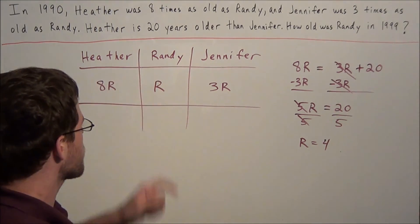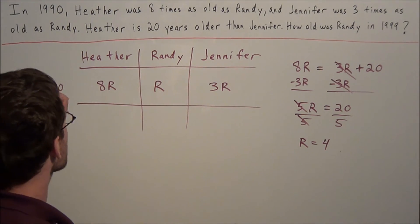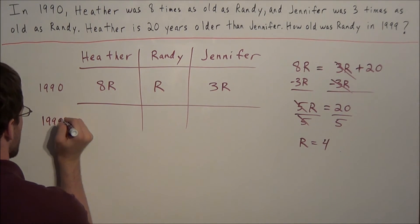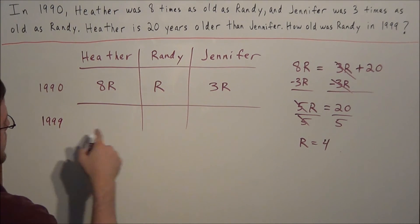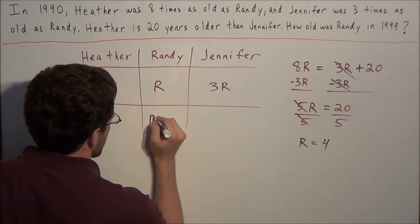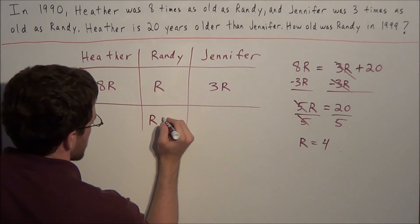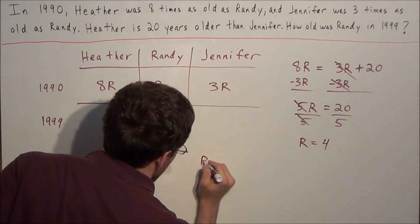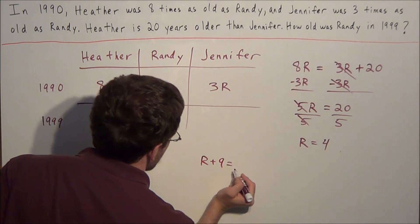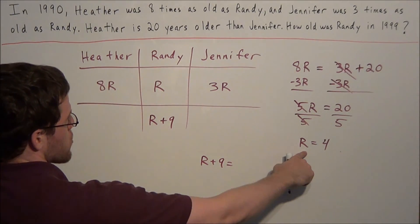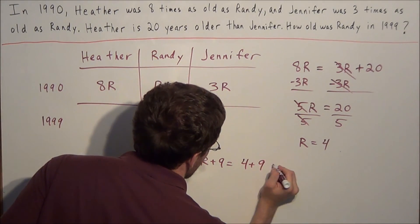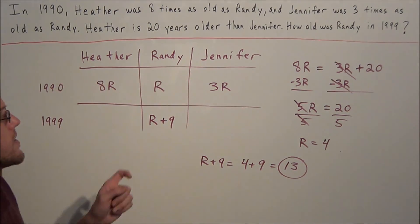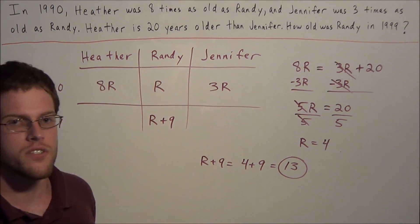So Randy is 4 years old. So now we want to find how old was Randy in 1999. Well 1999 is 9 years after 1990. So that means we're going to take Randy's old age and add 9 to it. So we need to find the value of r plus 9. So we have r plus 9 is equal to, and remember we just found r equals 4, so we have 4 plus 9, which is equal to 13. So in 1999 Randy was 13 years old.